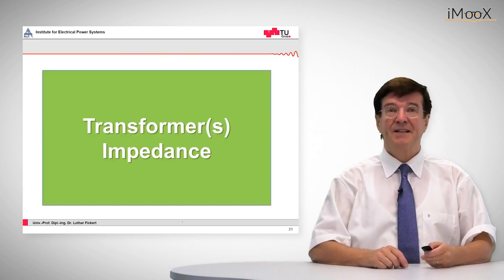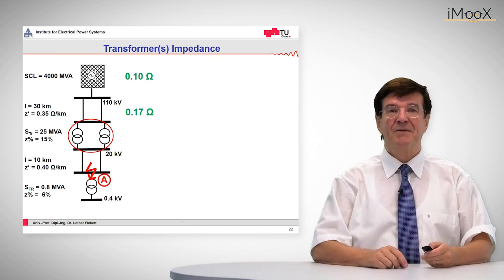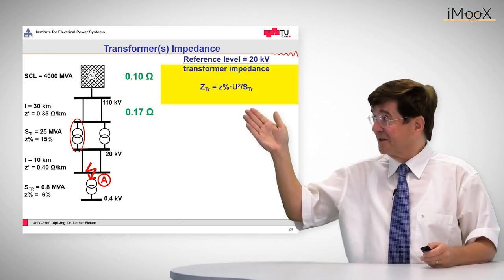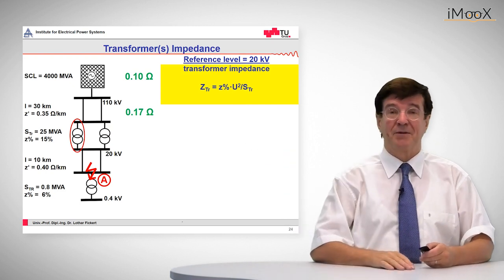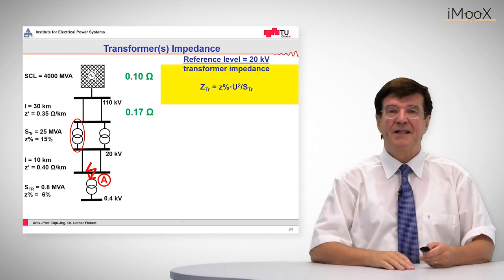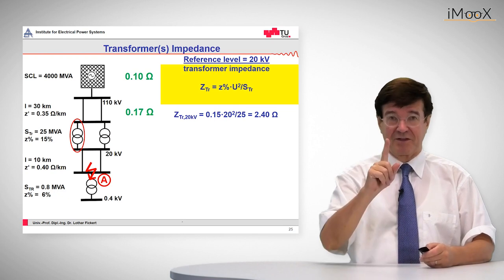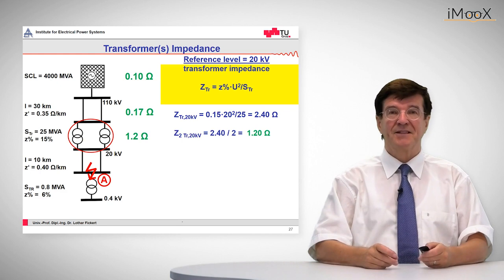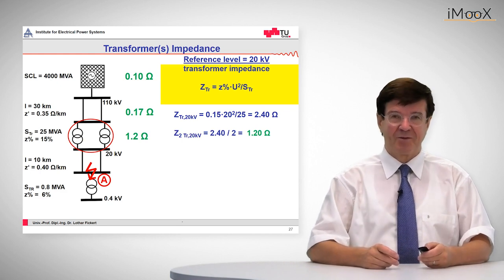Next is the transformer impedance. The transformer impedance is given by the percentage voltage times U squared divided by the apparent power of the transformer. In this case we obtain for one transformer 2.4 ohms, and two transformers in parallel is half of that. So this is the transformer impedance.